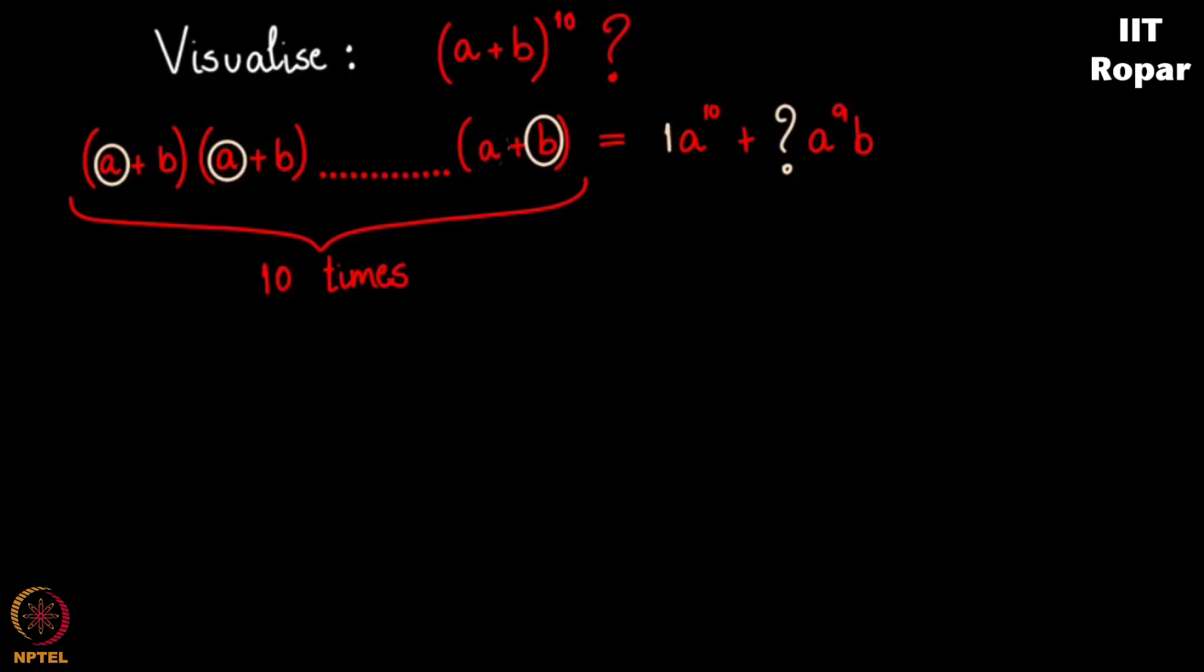In how many ways can you get a to the 9 times b? That's an easy question to answer actually. Observe carefully. You can choose a b from any of these 10 cells and call it as the cell from where you are picking your b. From the rest of the cells, you declare that you are going to pick only a's. Now this question boils down to you picking a b from 10 cells. You can pick that in 10 ways, correct? So this 10 will be the coefficient of a to the 9 times b.